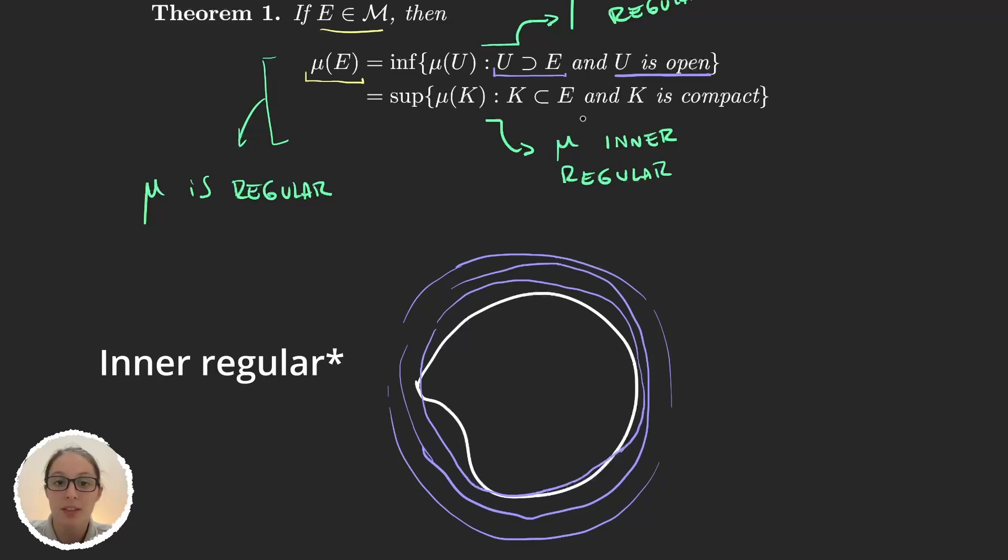And if it's inner regular, then we can approximate it with subsets that are compact. So that means that we can approximate it from the inside. So I can just grab compact sets.